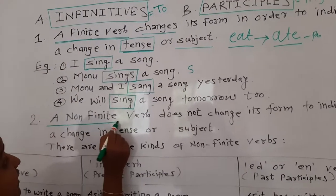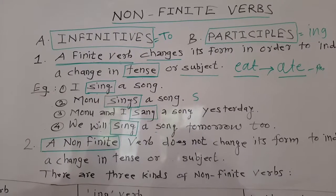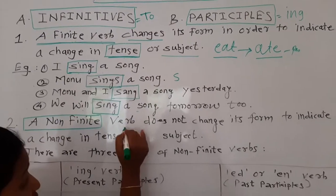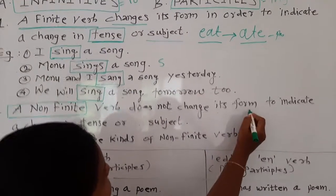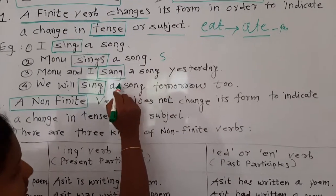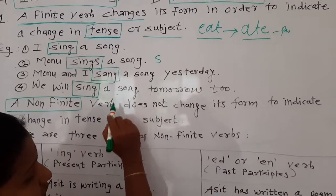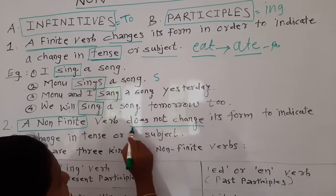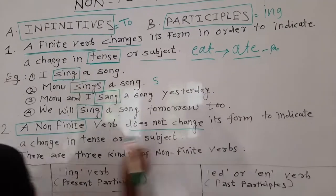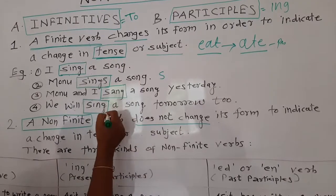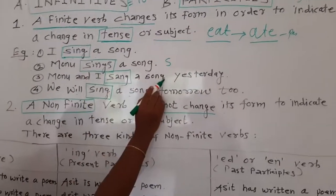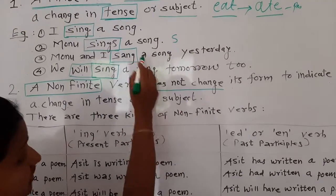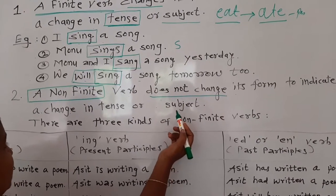Now, what is a non-finite verb? A non-finite verb is also a verb, but it does not change its forms — like past form or future form. It does not change to indicate a change in tense or subject. Where the finite verb changed for present, past, and future tense, here there are no such changes. That is why it is called a non-finite verb.